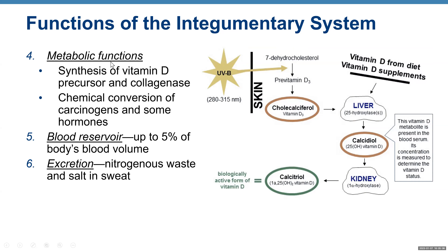Metabolic functions include synthesis of vitamin D precursor and collagenase. Collagenase is an enzyme that breaks down collagen. There is also chemical conversion of carcinogens and some hormones. On this diagram, you can see that UV radiation from the sun is needed to produce the precursor of vitamin D, cholecalciferol, and then the liver and kidney are involved in conversion of this precursor to the biologically active form of vitamin D. Also, your skin is a blood reservoir — up to 5% of the body's blood volume is stored in cutaneous blood vessels. The last function here is excretion: small amounts of nitrogenous waste and salt are excreted in sweat.